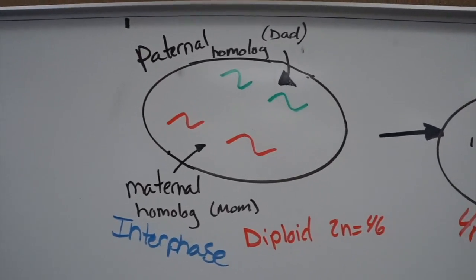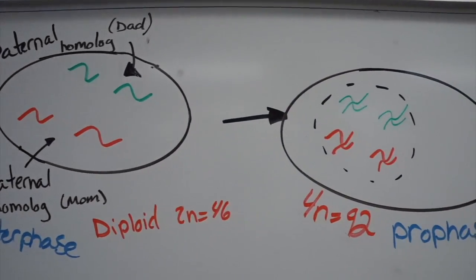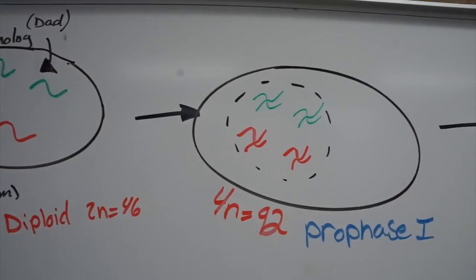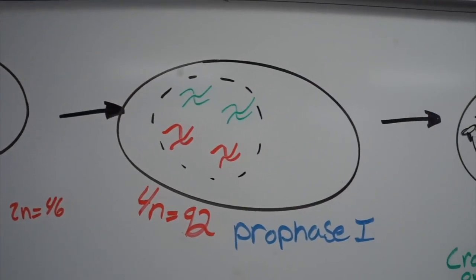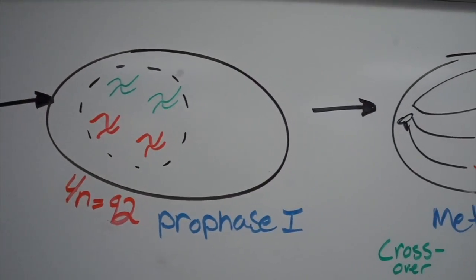We have 23 chromosomes from mom, 23 chromosomes from dad, and we're going to go through interphase, where we double our information. Now we have 92 chromosomes entering meiosis 1.